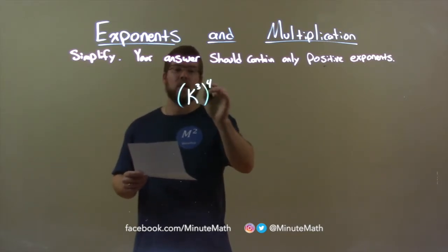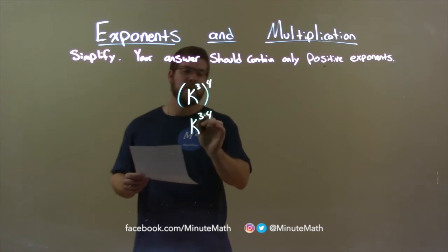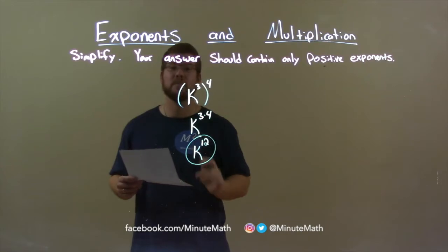So, k to the third all to the fourth power is the same thing as k to the three times four power. Three times four is twelve, so my final answer is k to the twelfth power.